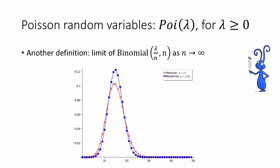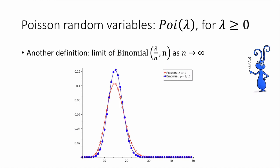The reason is that another way to define a Poisson random variable is as the limit of a binomial distribution. Imagine that we flip n coins which are heads with probability lambda over n. The number of heads we get is a binomial random variable with parameters lambda over n and n. We can also define the Poisson distribution with parameter lambda as the limit as n goes to infinity of this binomial distribution.